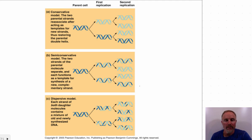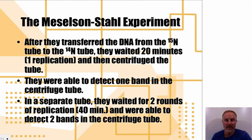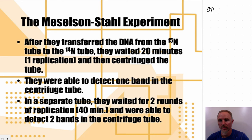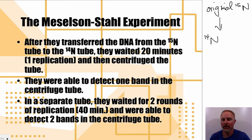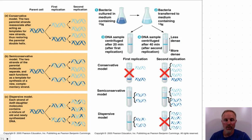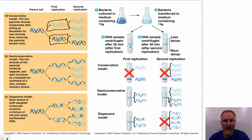This is a summary of the three models. The original population contained all heavy nitrogen. After transferring to N-14 medium and allowing 20 minutes — one round of replication — they broke the cells apart, centrifuged the DNA, and detected only one band. Seeing one band ruled out the conservative model, which predicted two bands after the first replication. So the conservative model was eliminated.